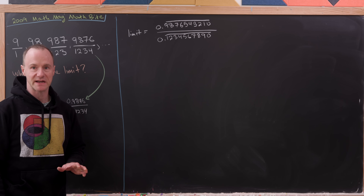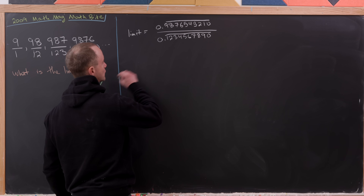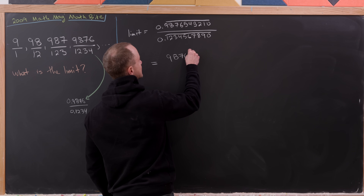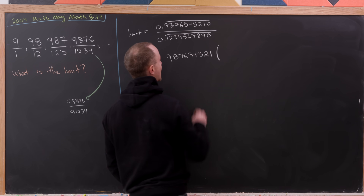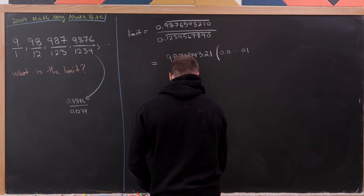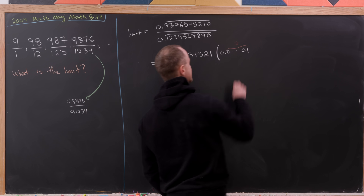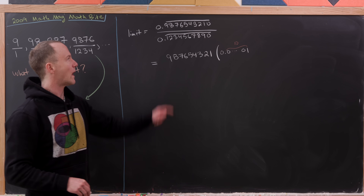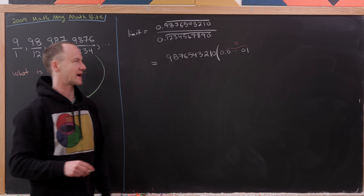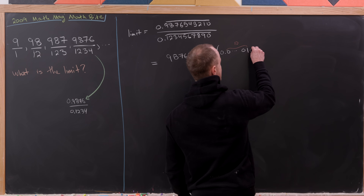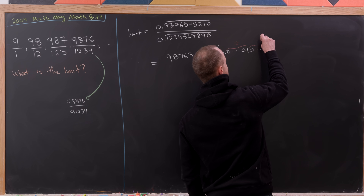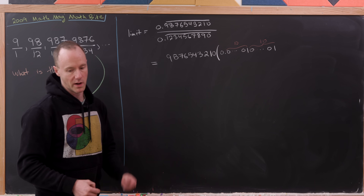It's straightforward to write repeating decimals as ratios of integers. The numerator can be written as 9876543210 times 0.000...1 where that 1 is the 10th digit — because we have to shift the decimal point 10 digits. Then there'll be zeros, and then another 1 at the 20th digit, so there are 10 digits between each, and so on and so forth.